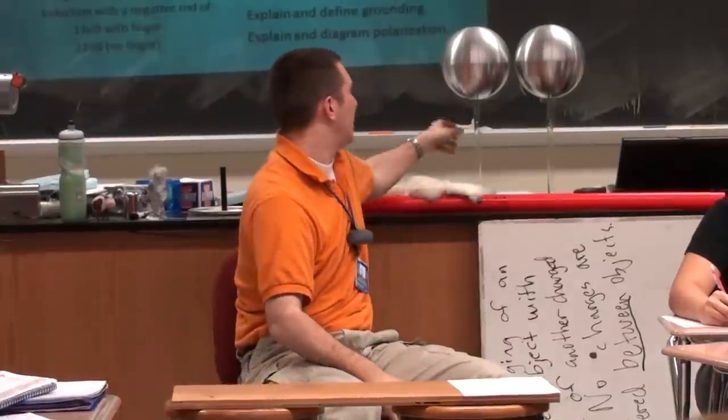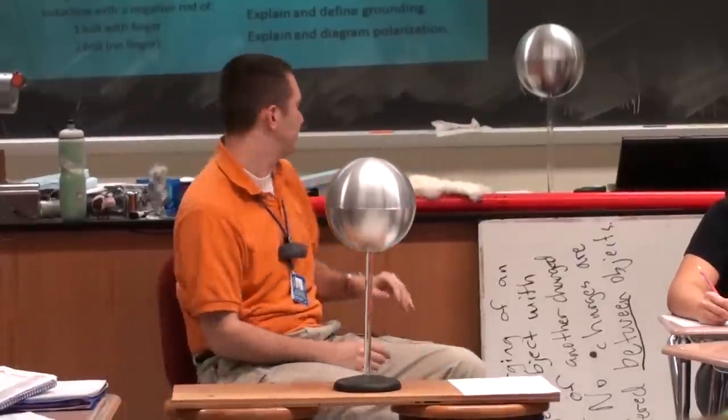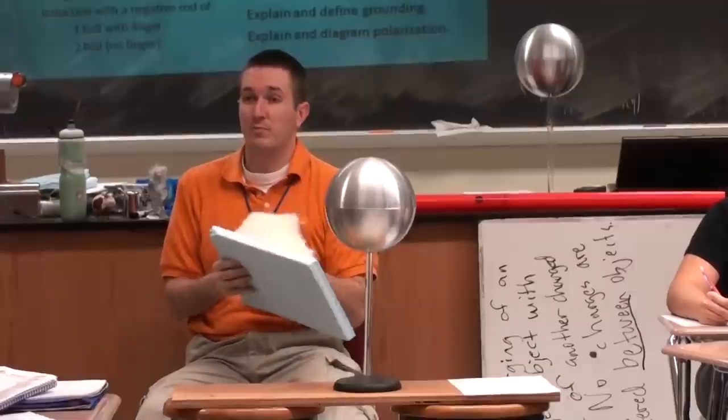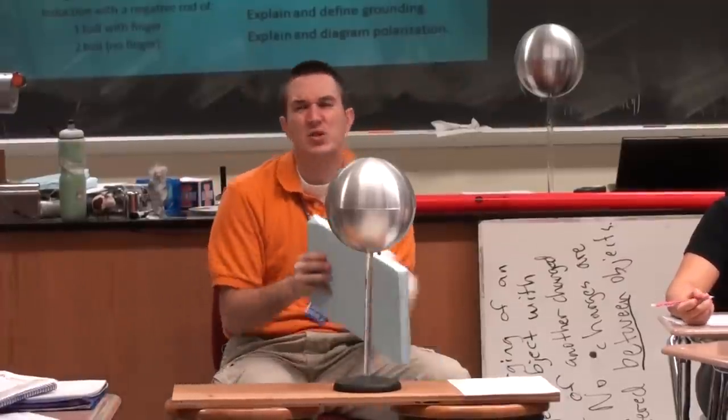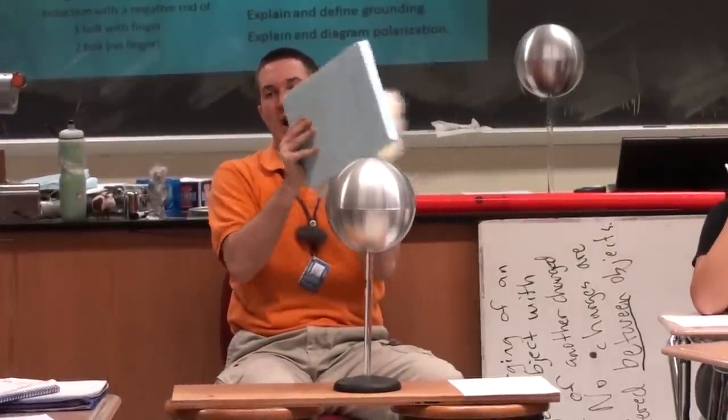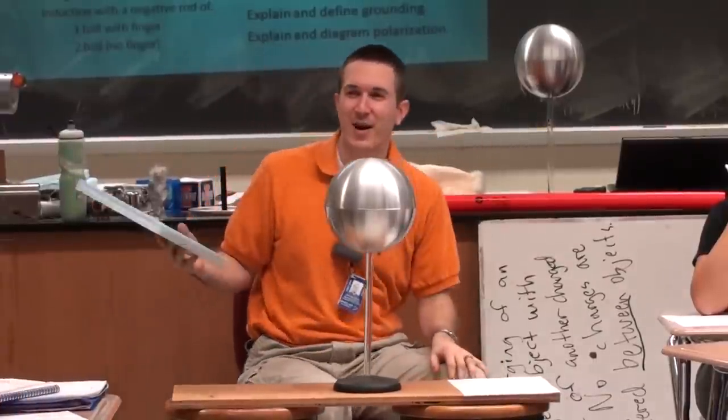The first one we're going to start out with is one sphere and a negative object. So right now, what is the charge on the sphere? The sphere is neutral. The charge on the negative object is? The charge on the negative object is negative.